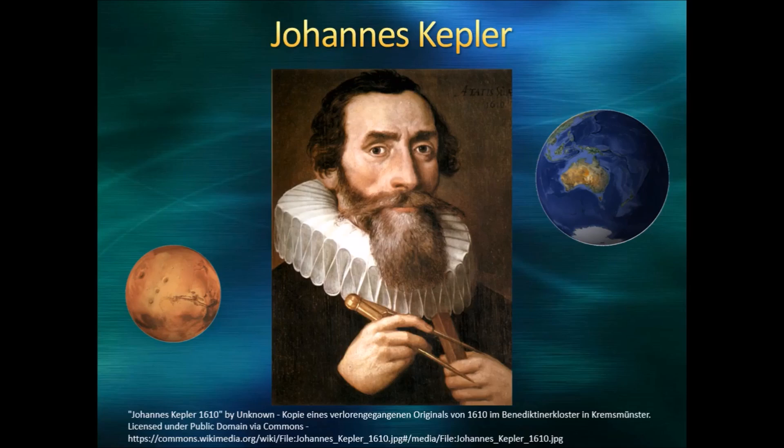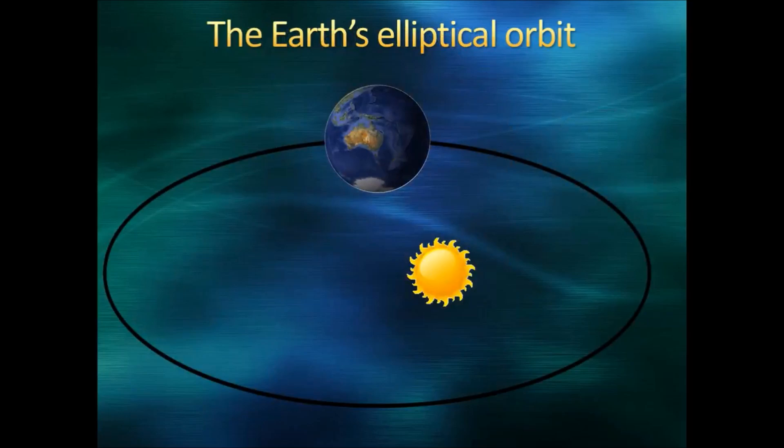People at that time assumed that planets moved in spherical orbits, but Kepler found that this wasn't true. He came to the conclusion that planets moved in ellipses around the sun. An ellipse fitted the data, but a circle did not. An ellipse is like a circle that has been squashed in one direction.